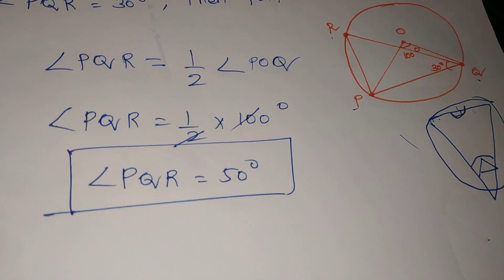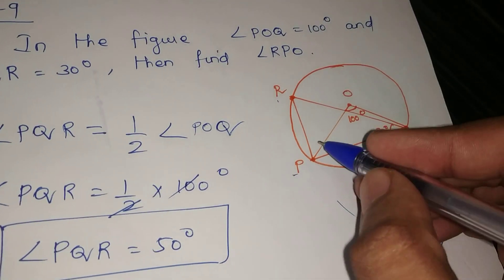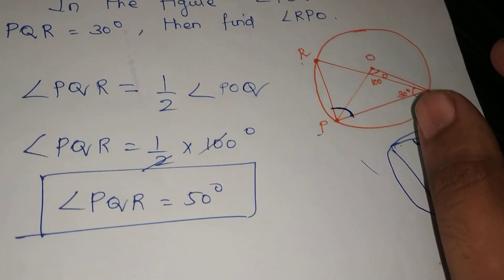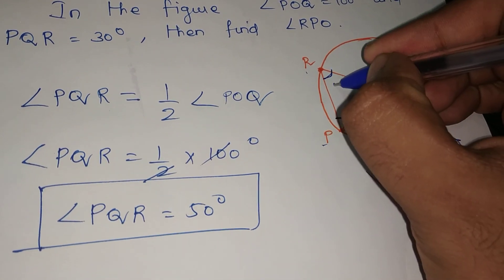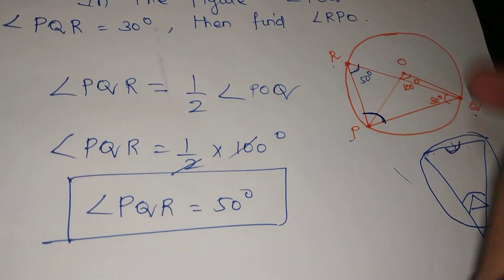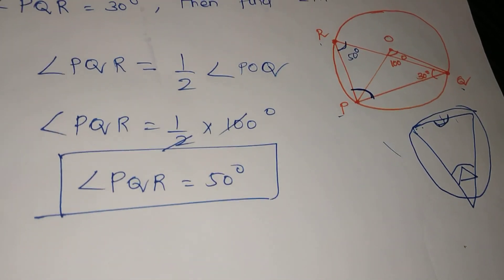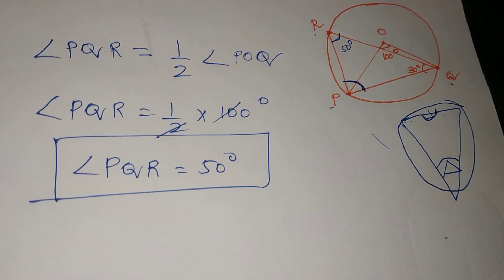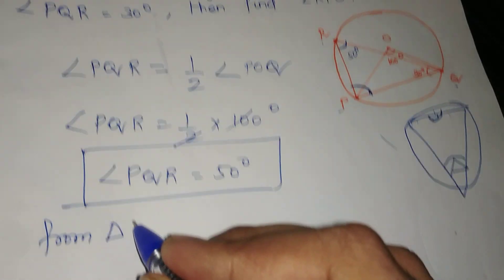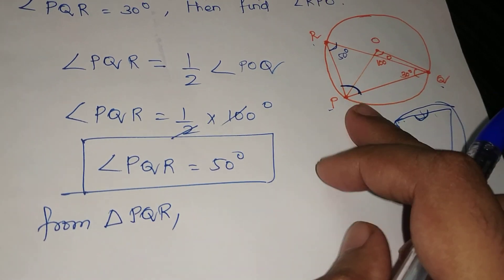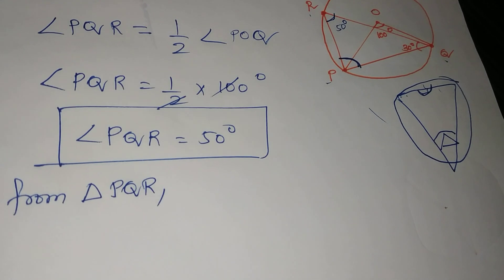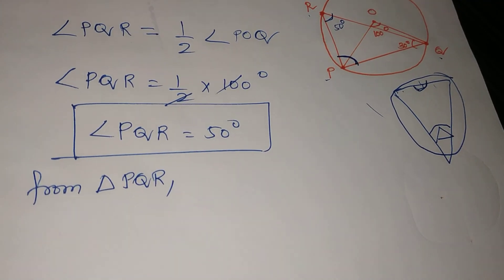Now, what do we do next? We will look at triangle OPQ. Angle PQR is established. We will find the total angle at R, which is 50 degrees. Now, from triangle OPQ, we look at angle OPQ, angle OQP, and angle O.